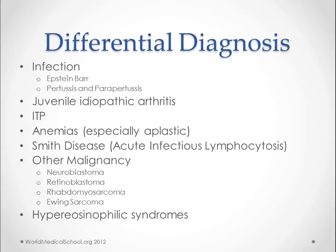Juvenile idiopathic arthritis is on the list because the bone pain might be close to the joints and will look like joint pain. Idiopathic thrombocytopenic purpura is on the list because these patients can also have petechiae. Since these kids are anemic, all anemias need to be ruled out, but especially aplastic anemia because of the thrombocytopenia you see here too.